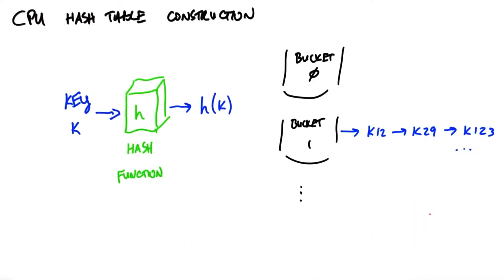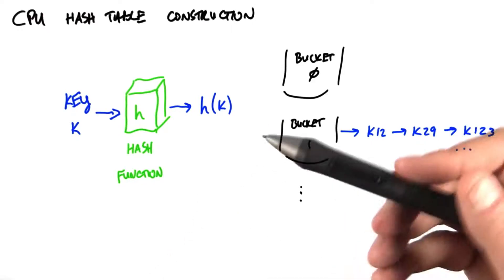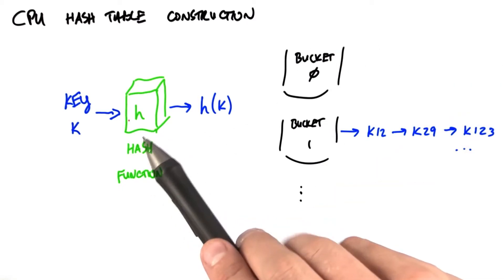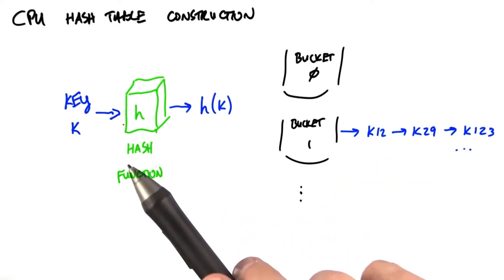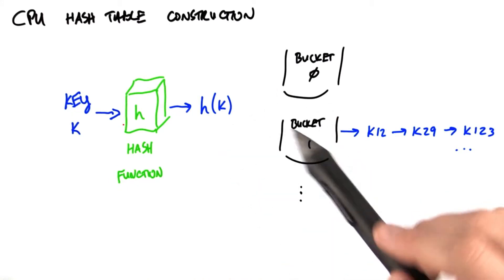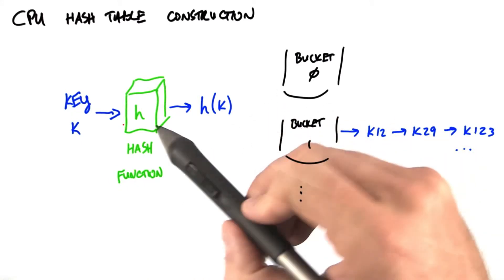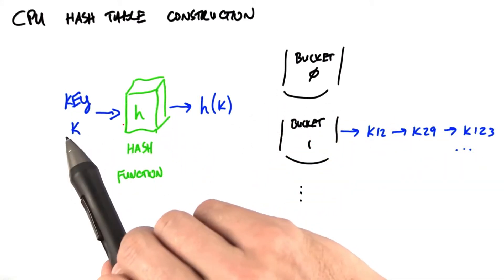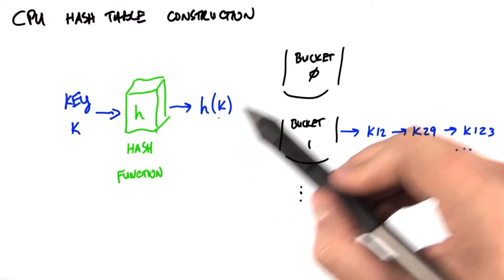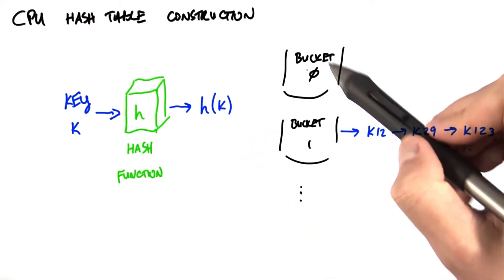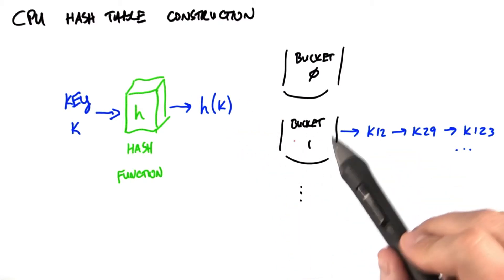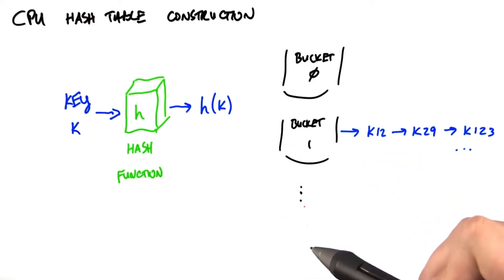The most common way to construct a hash table on a CPU works as follows. We have a bunch of buckets, and we have a hash function h. This hash function takes a key and maps that key into one of those buckets. So if h of k returns 0, then that key is associated with bucket 0. If h of k is 1, then that key is associated with bucket 1, and so on.